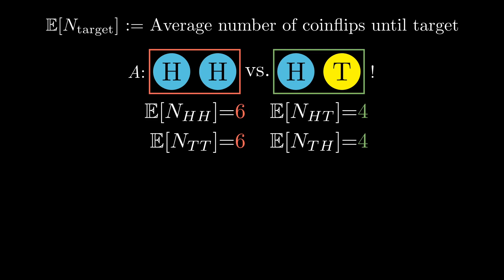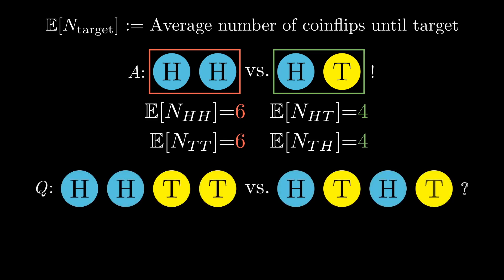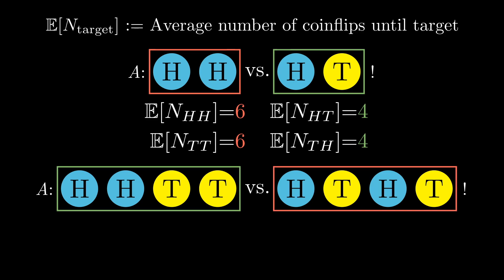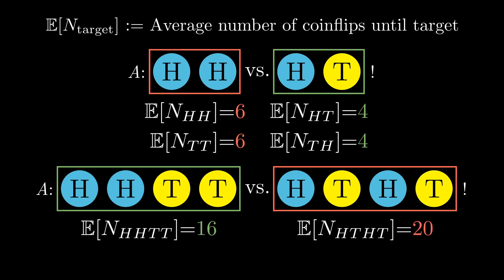In fact for longer sequences things continue to be very counterintuitive. Consider the target sequences of length four: heads-heads-tails-tails versus heads-tails-heads-tails. You might guess that since heads-heads takes longer than heads-tails, and tails-tails also takes longer than tails-heads, then heads-heads-tails-tails should take longer than heads-tails-heads-tails. Surprisingly, no — heads-tails-heads-tails is the slow one taking 20 flips on average, while heads-heads-tails-tails takes only 16. By the end of the video we'll develop a simple one-line method to calculate any of these expected values.